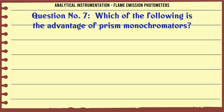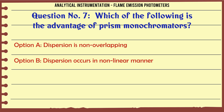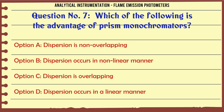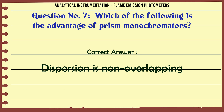Which of the following is the advantage of prism monochromators? A. Dispersion is non-overlapping. B. Dispersion occurs in a non-linear manner. C. Dispersion occurs in a non-linear manner. The correct answer is: Dispersion is non-overlapping.